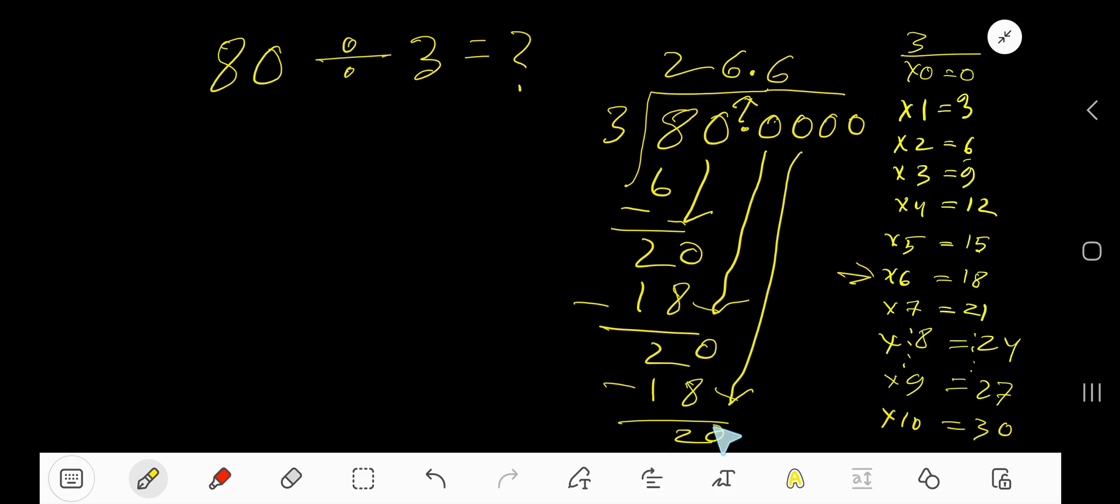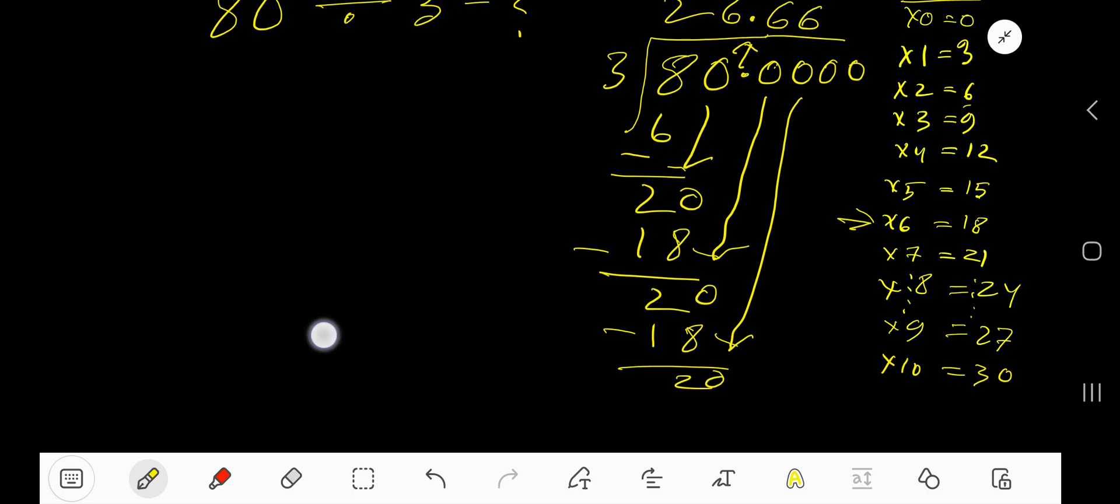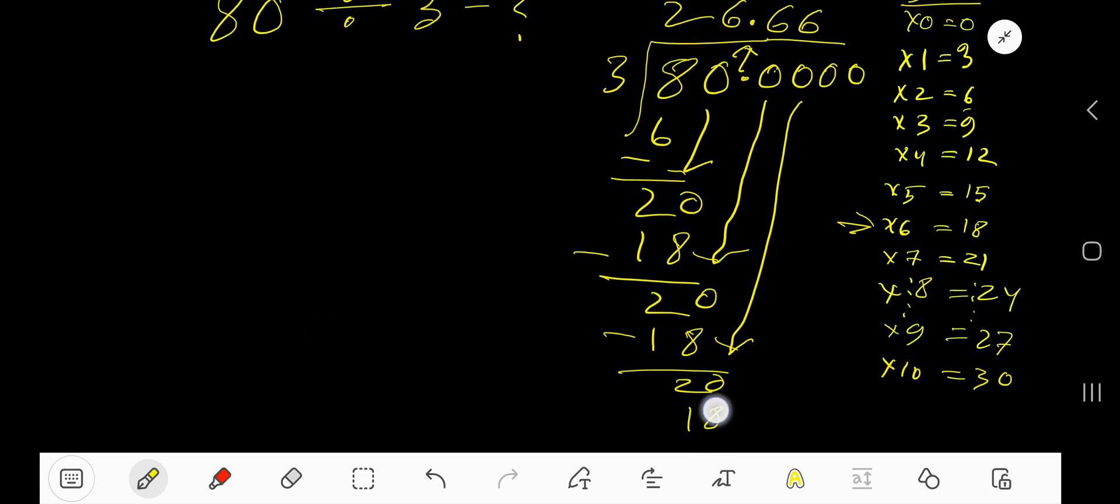Bring down this 0. 3 goes into 20. How many times? 6 times. 6 times 3, 18. Subtract 2.